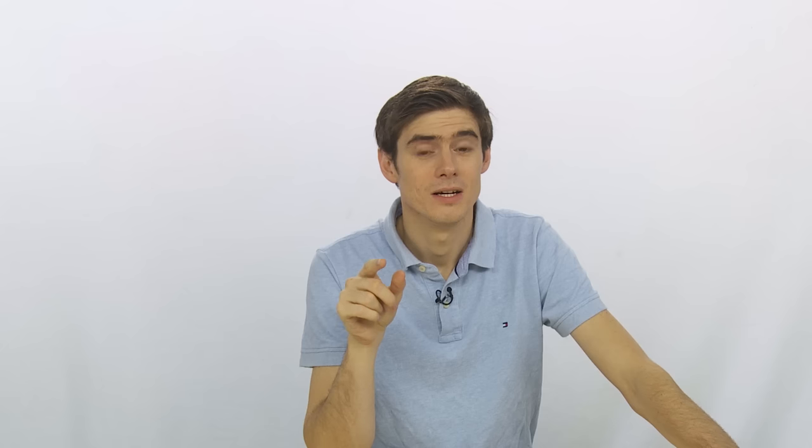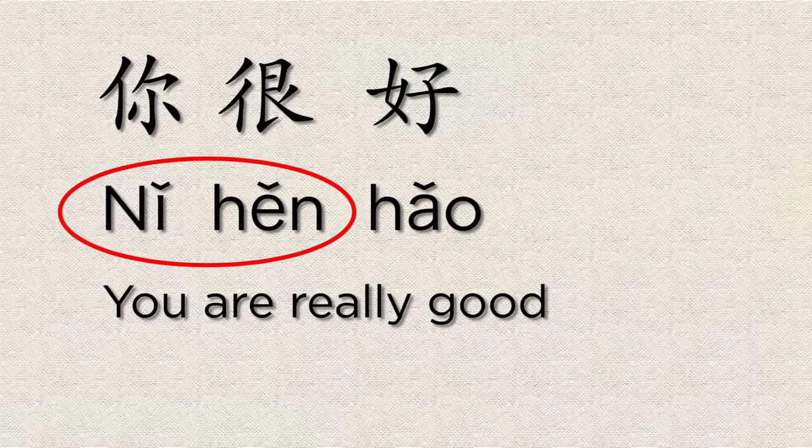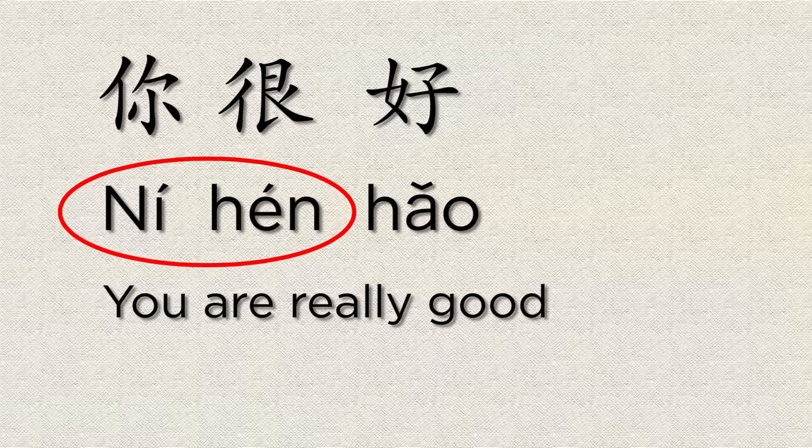If there's more than one third tone, let's say ni hao ma. Three third tones in a row. The first two are going to change to second tones and only the last one will stay as a third tone. So it would be ni hao ma. That's basically how it changes. When you've got more than one third tone in a row, if it's just two, the first one changes to the second tone. And if it's more than one, only the last one will stay as the third tone and all the others will change to the second tone.